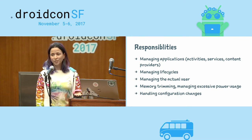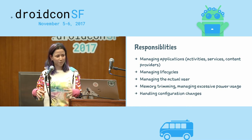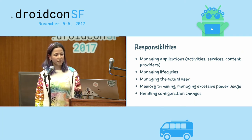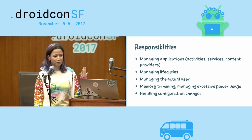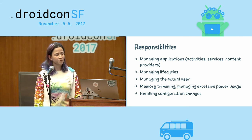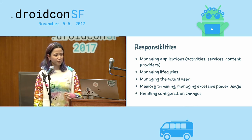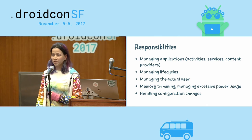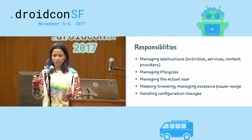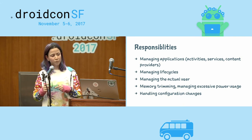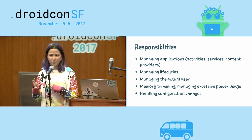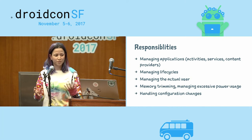The activity manager is responsible for memory trimming and managing excessive power usage — if an activity goes rogue, it will kill it. It handles configuration changes and decides whether to go through the full lifecycle of an activity depending on the setting.